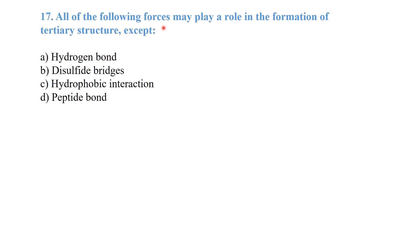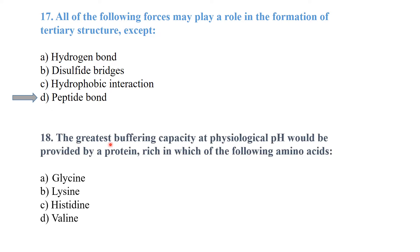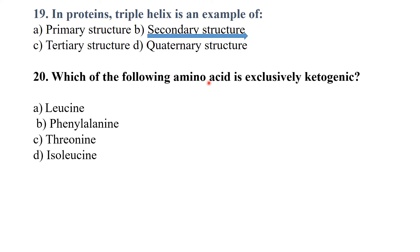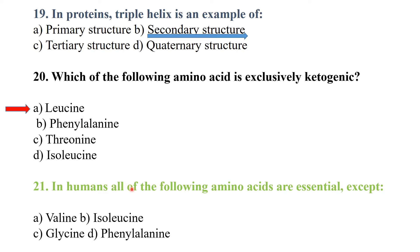All of the following forces may play a role in the formation of tertiary structure except peptide bond. The greatest buffering capacity at physiological pH would be provided by a protein rich in histidine amino acid. Alpha helix is an example of secondary structure. Which of the following amino acid is exclusively ketogenic? Leucine is exclusively ketogenic in humans.